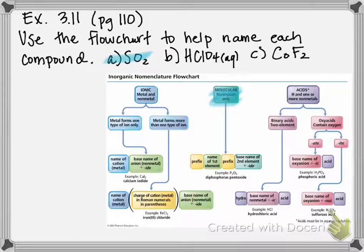Remember that if we have one of our first element, we don't have to put mono in front of it, it's just understood. So the first name in this is literally going to be sulfur, and then we have two oxygen so the prefix for two is di. So it's going to be di, and remember we replace that ending with ide, so it's going to be sulfur dioxide.